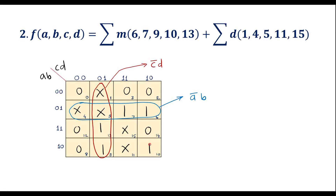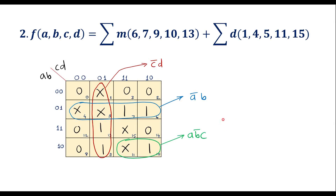We have one more 1, which can be paired with a don't-care value to form a pair. This corresponds to the row with value a·b-bar. With respect to the two columns, the common value is 1, giving c, so the value of this group is a·b-bar·c. All 1s are now covered, so we stop. The simplified boolean function is: f = c-bar·d + a-bar·b + a·b-bar·c.